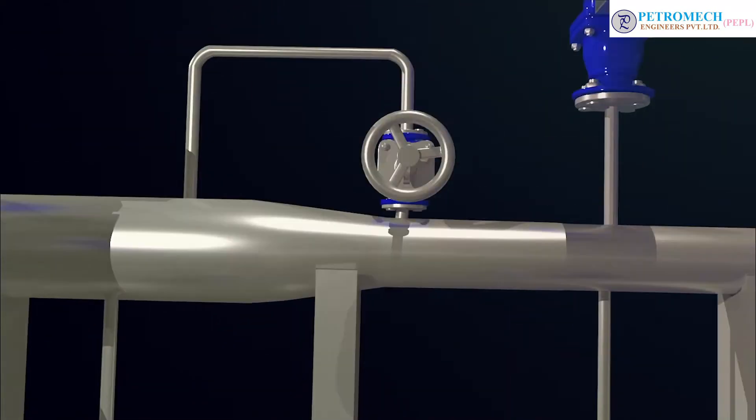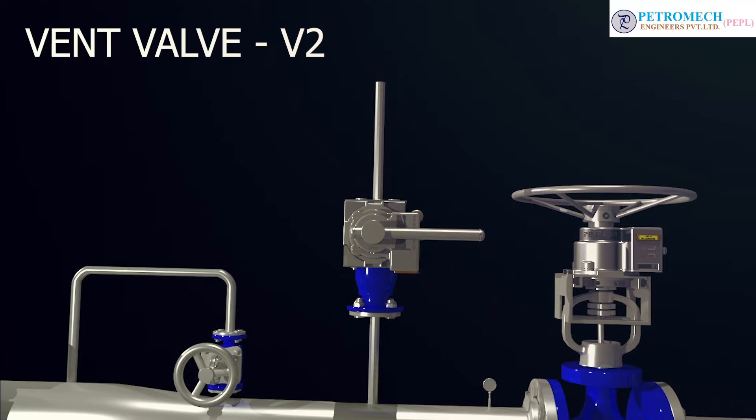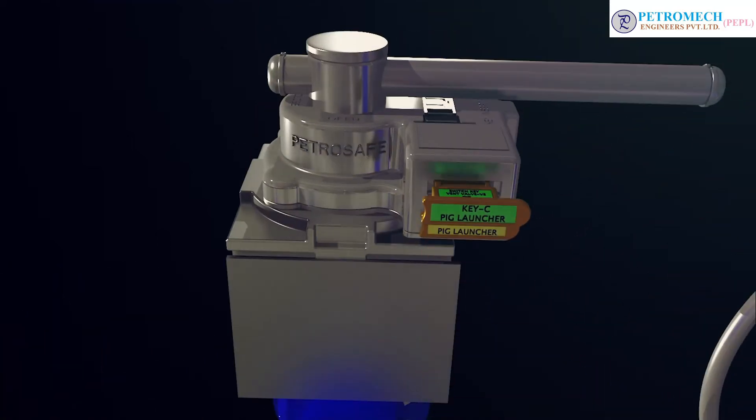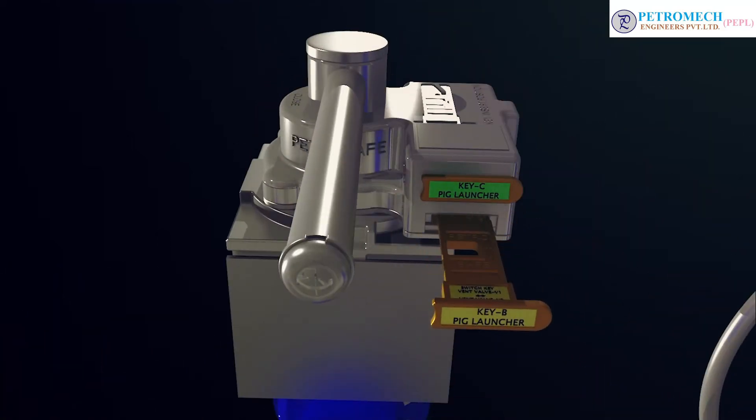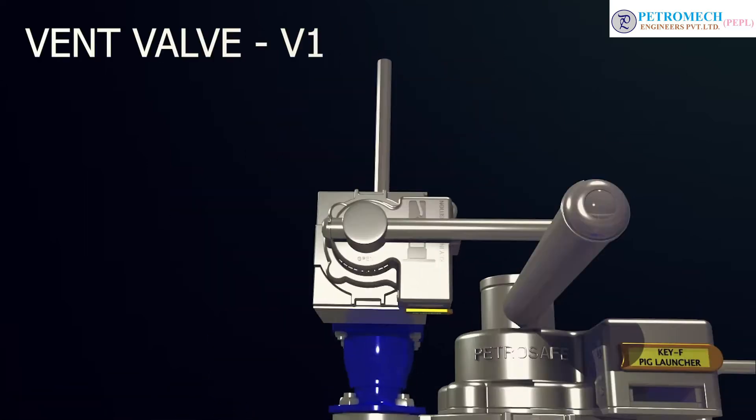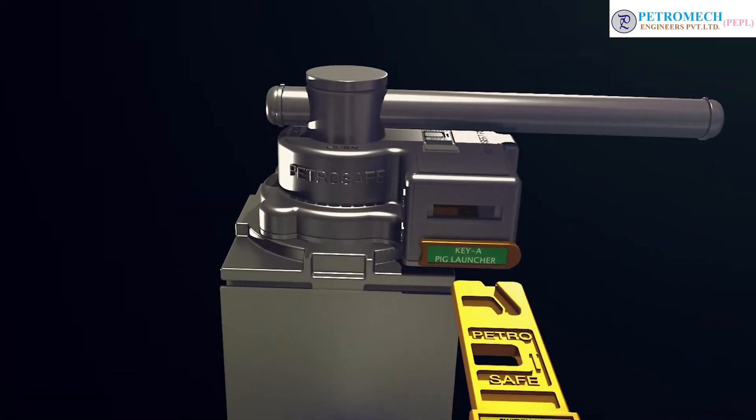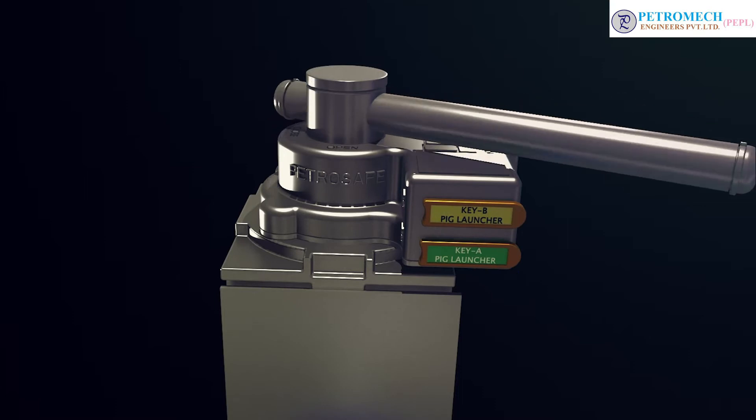Step 13: Insert key C into vent valve V2 and close the valve by releasing key B. Step 14: Insert key B into vent valve V1 and close the valve by releasing key A.